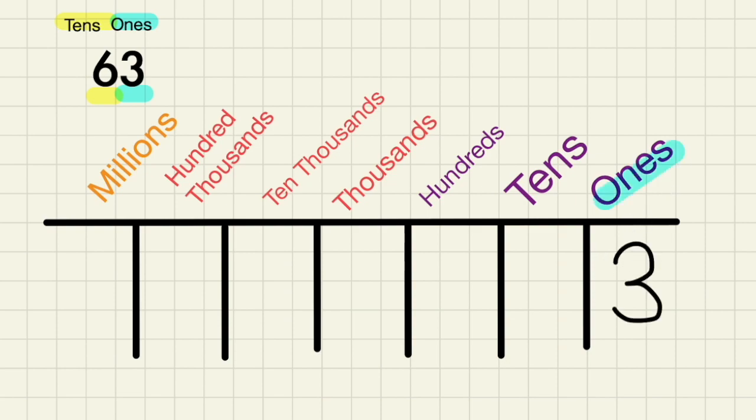Number 3 is in the ones place, so we can write 3 in the ones section. And then number 6 is the tens place, so we can just write it right under tens on the chart.